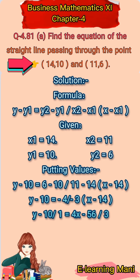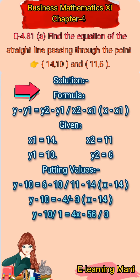Question number 4.81: find the equation of straight line passing through the points (14, 10) and (11, 6). The formula is: y minus y1 divided by y2 minus y1 equals x minus x1 divided by x2 minus x1. Given: x1 = 14, y1 = 10, x2 = 11, y2 = 6.